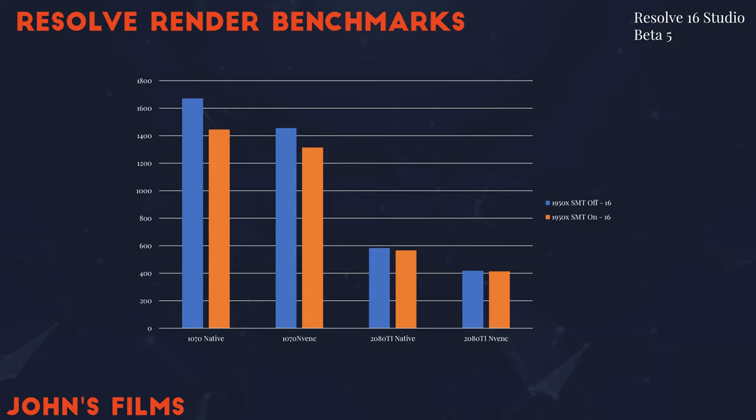The 1070, when using the NV-ENC hardware processor, runs about 10% faster. But when you get to the 2080 Ti, the difference is much less stark. You only get a 3% improvement with the 2080 Ti running in native encoding, and only 1% improvement when running the 2080 Ti with the NV-ENC hardware encoder.